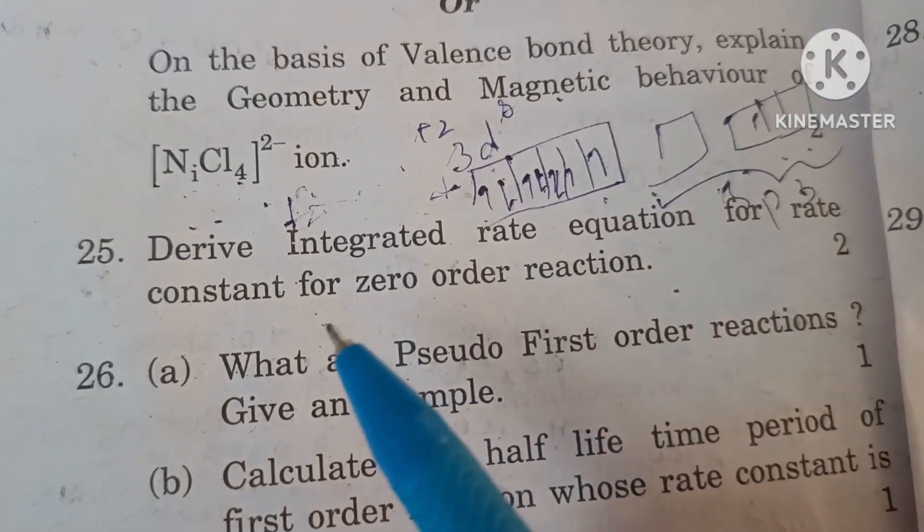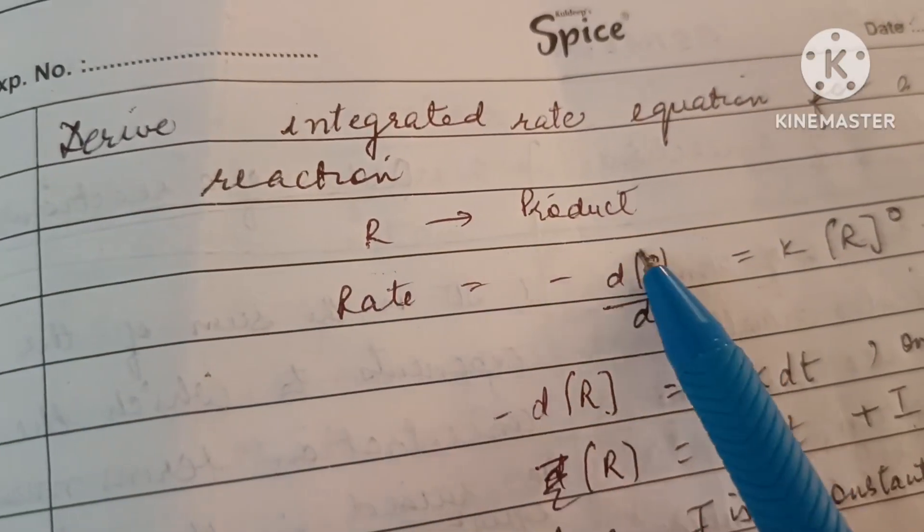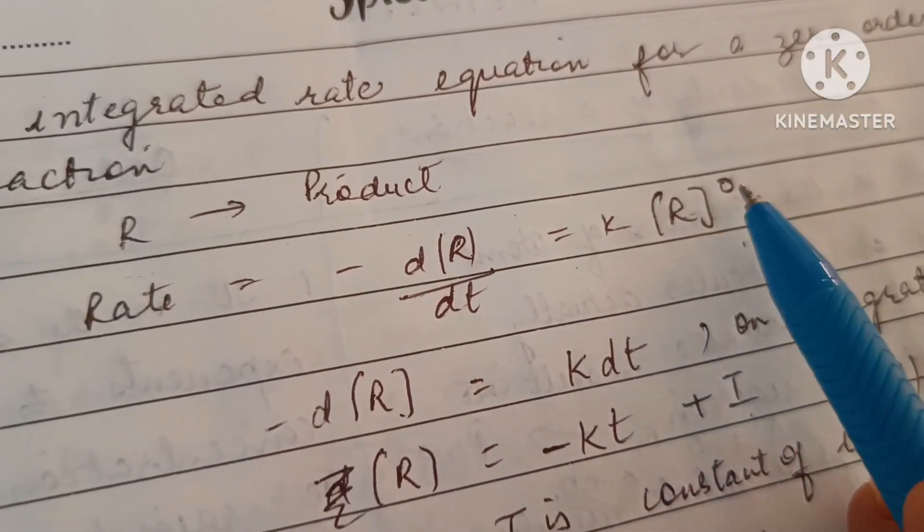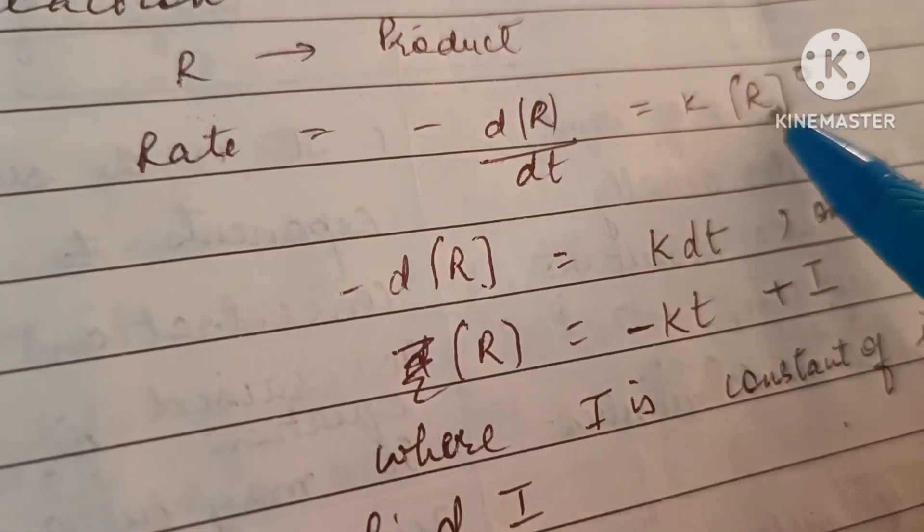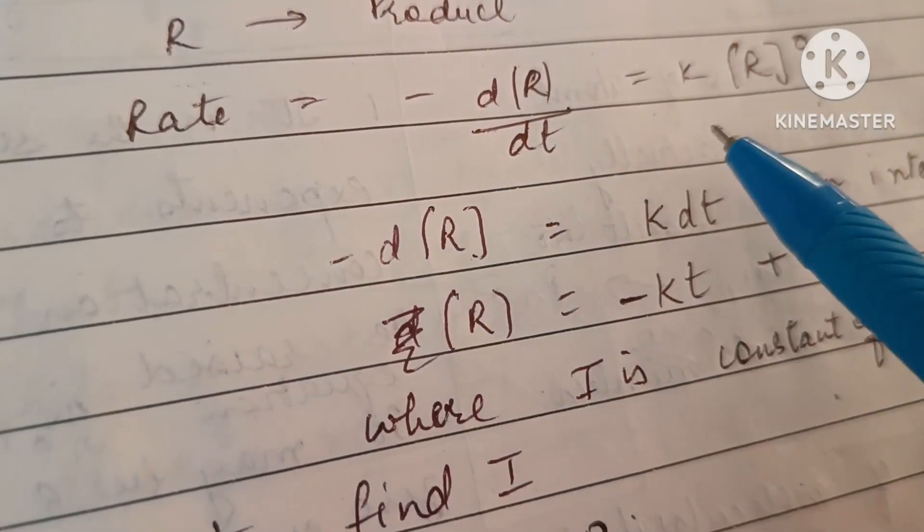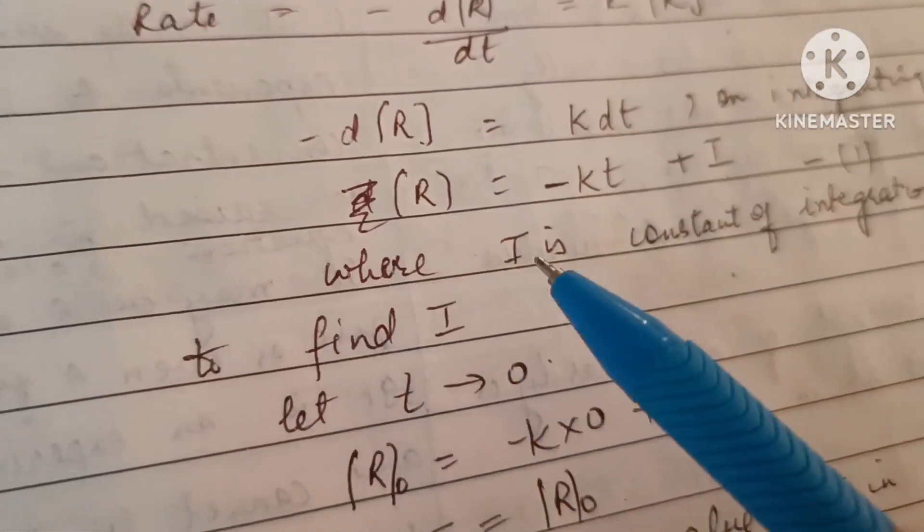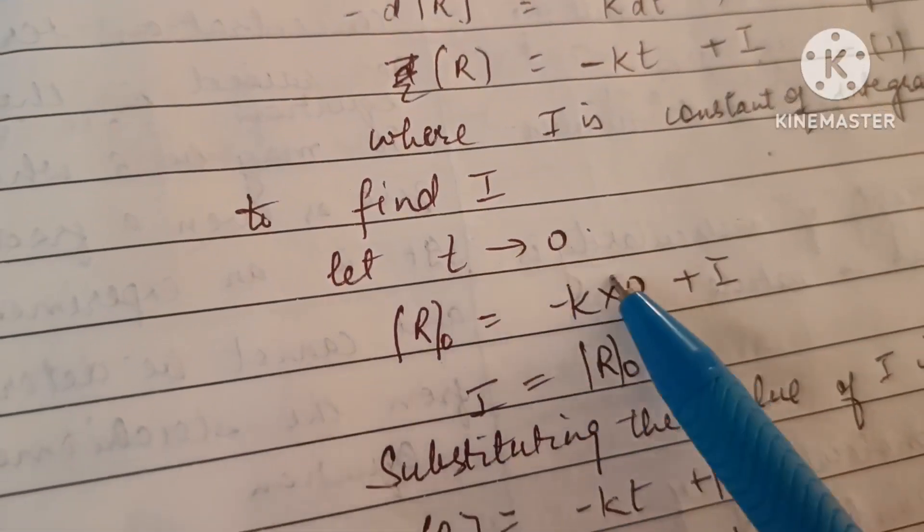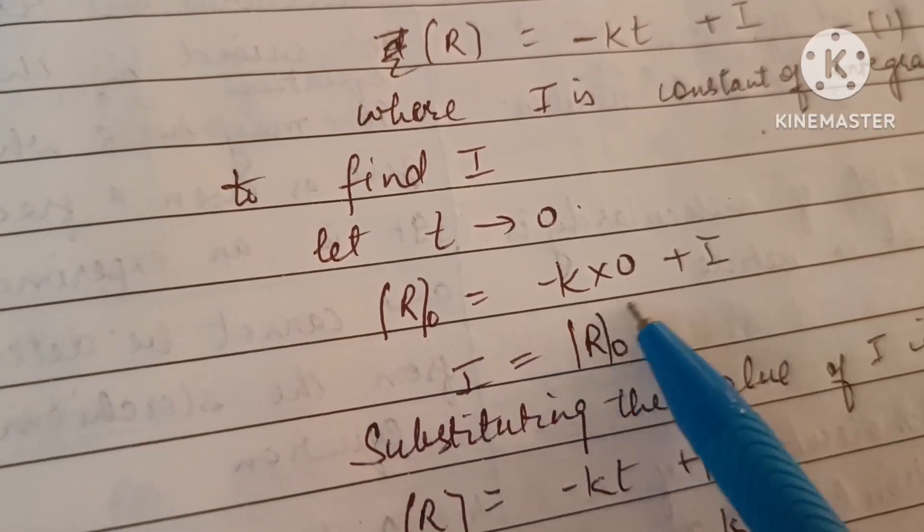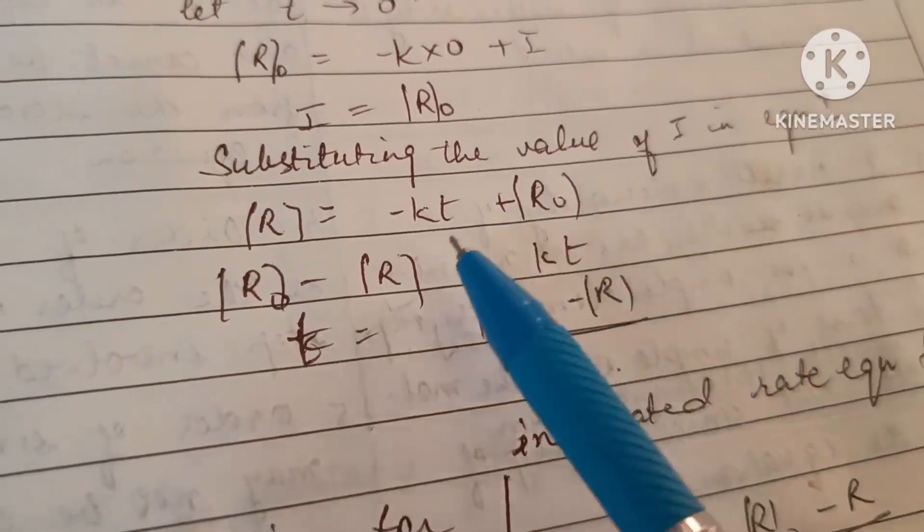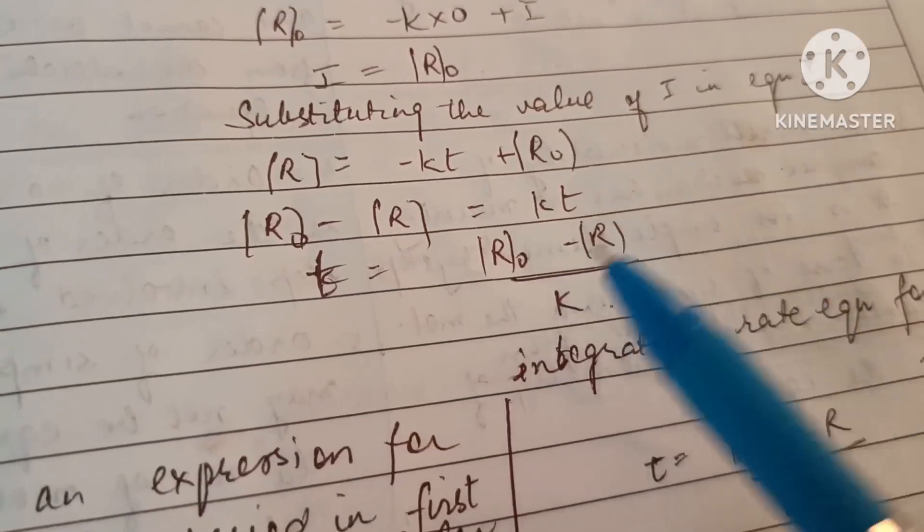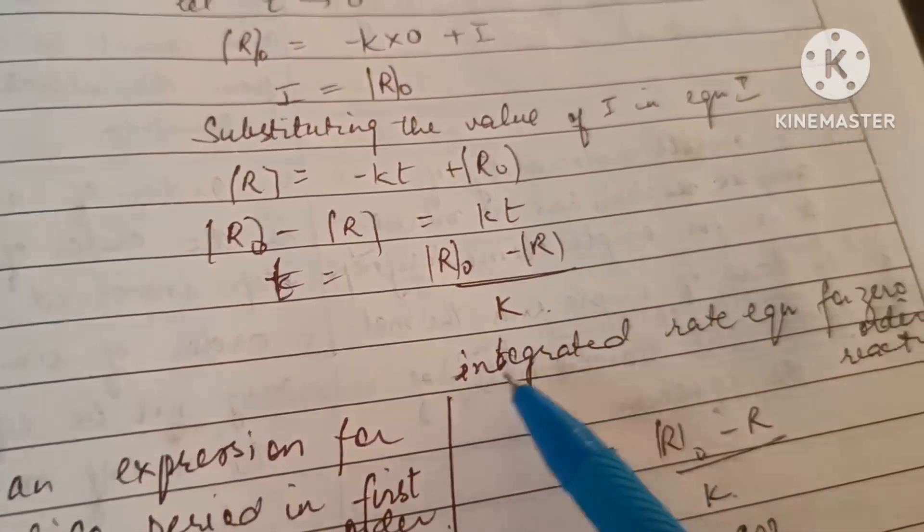Derive integrated rate equation for rate constant for zero order reaction. Let the reactants change into product. The rate will be change in concentration of reactant with time equal to k times R raised to power zero. It is a zero order reaction, R raised to power zero is one, so equation is reduced to -dR/dt = k or -dR = k dt. Taking integration we get R = -kt + I. To find the constant of integration, let t approach zero, so R becomes R₀ and equation becomes R₀ = -k(0) + I, that is I = R₀. Substituting the value of I in equation one we get R = -kt + R₀ or R₀ - R = kt or t = (R₀ - R)/k. This is the integrated rate equation for zero order reaction.